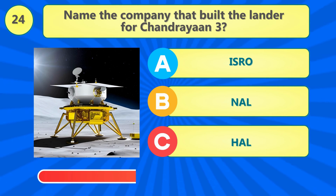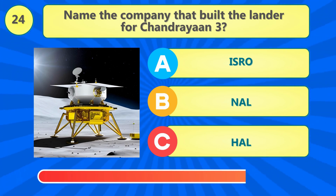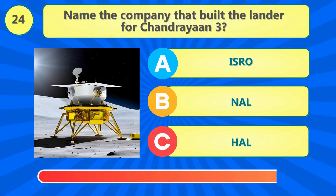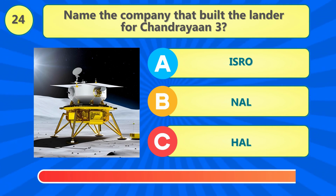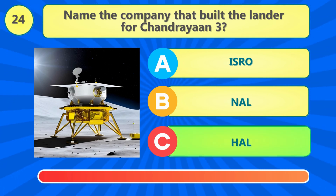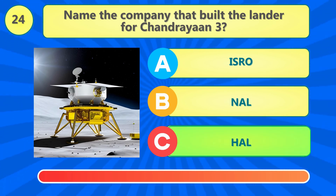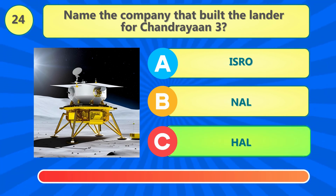Name the company that built the lander for Chandrayaan 3. The correct answer is option C.